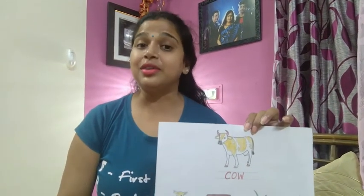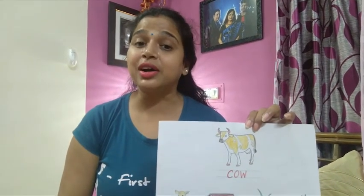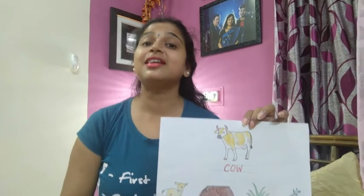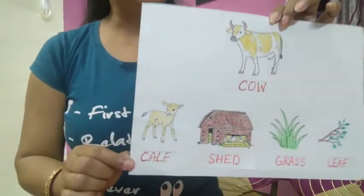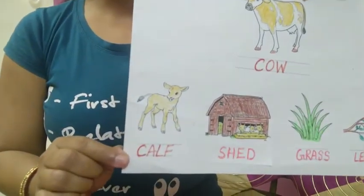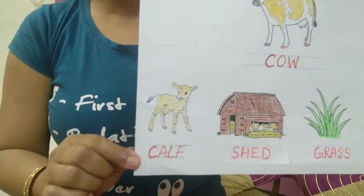What is the original name of baby cow? Calf. The baby cow's original name is calf.